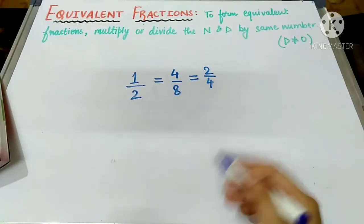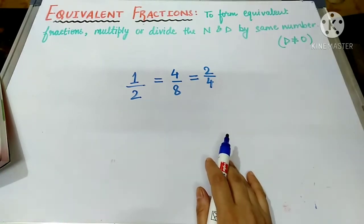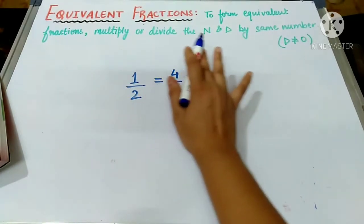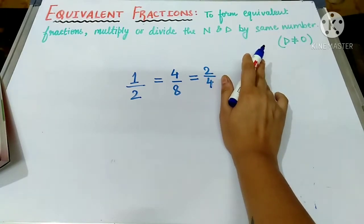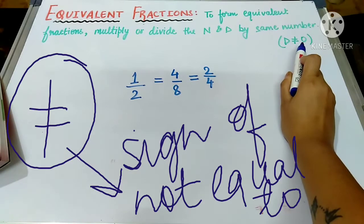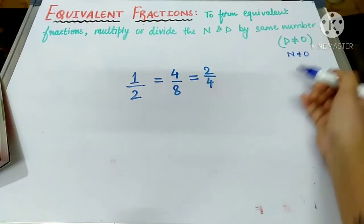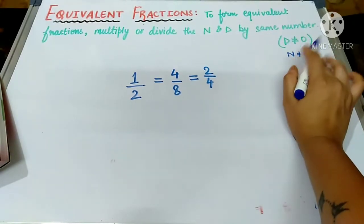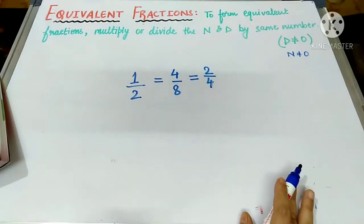How to find whether the fractions are equivalent or not? Hum visually dekh kar ke to nahi bata sakte har fraction ke liye. To form equivalent fractions, multiply or divide the numerator and the denominator by the same number, and the denominator should not be equal to zero. Numerator should also not be equal to zero. Zero ko chhodke aap kisi bhi number ko le sakte hain.